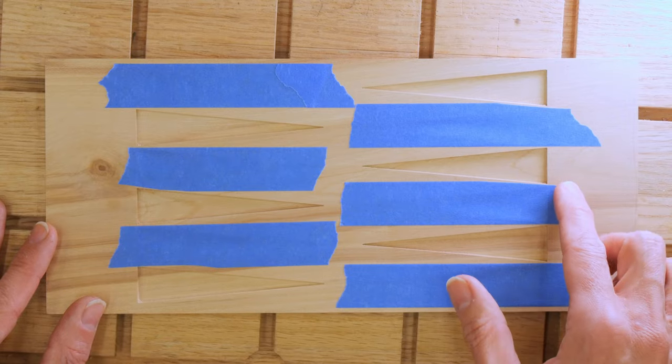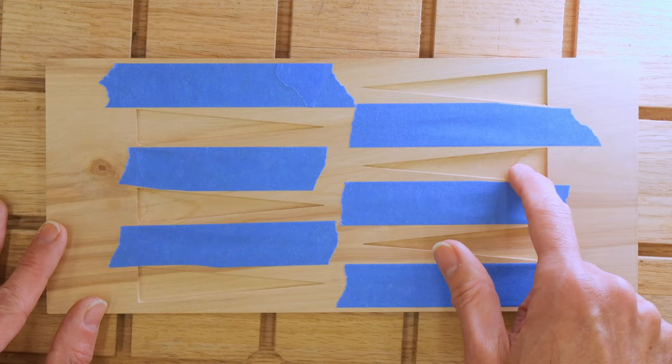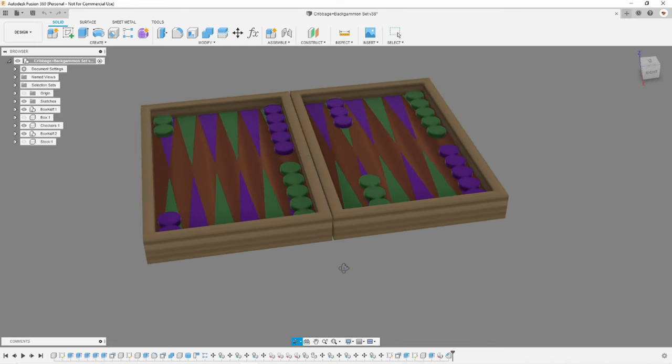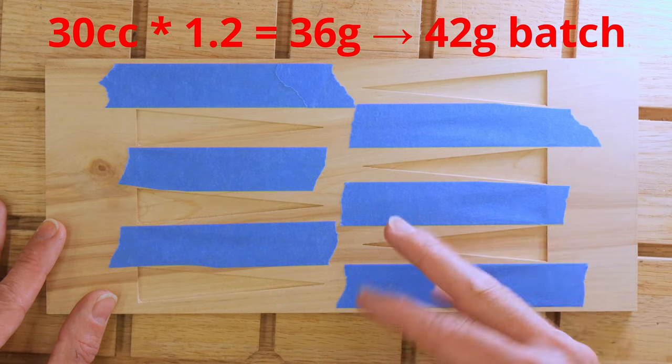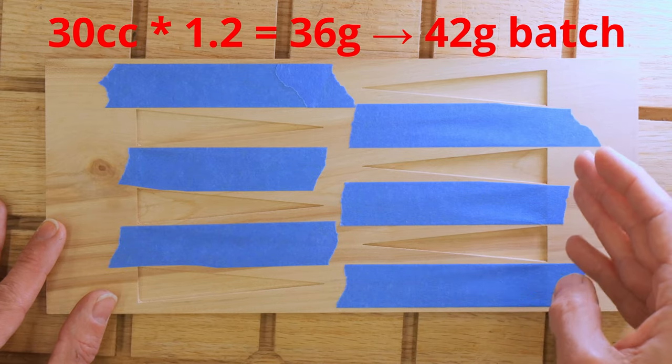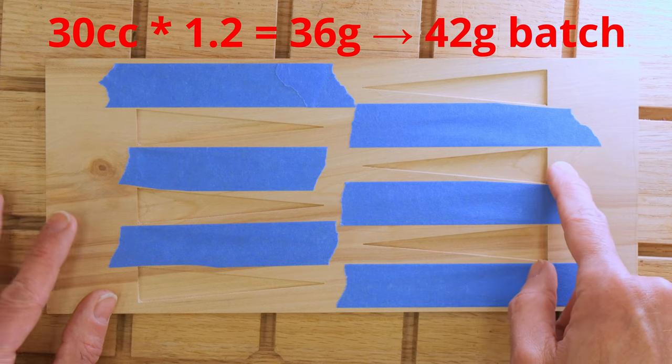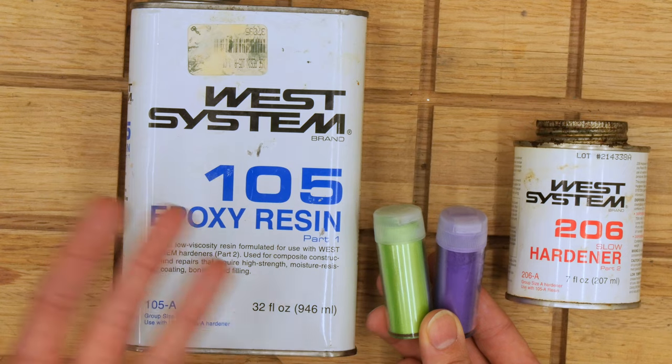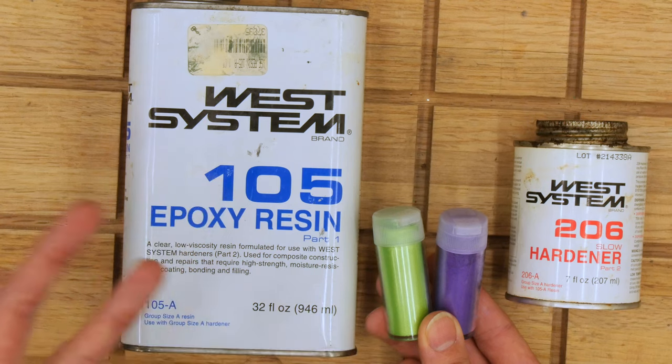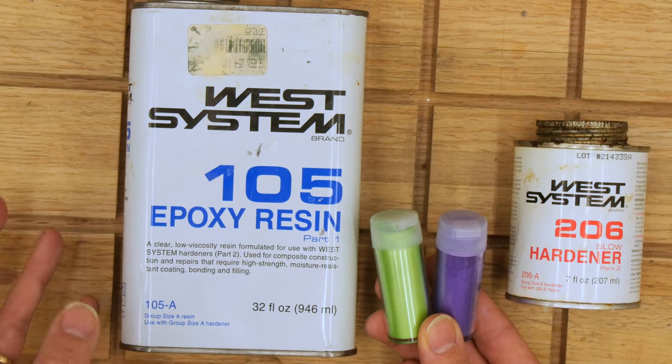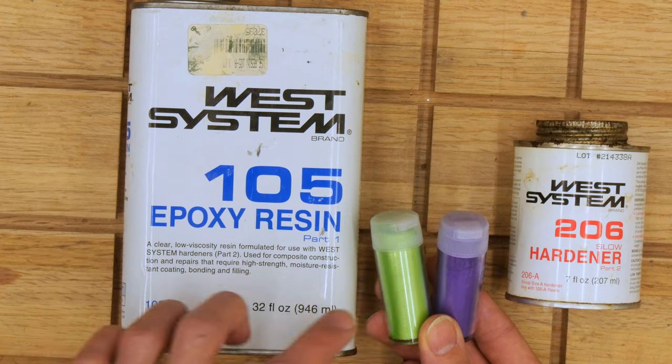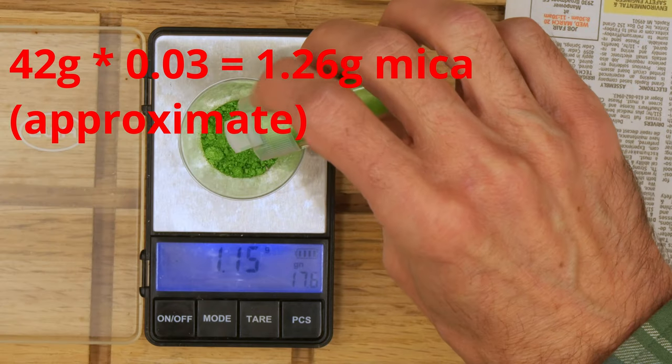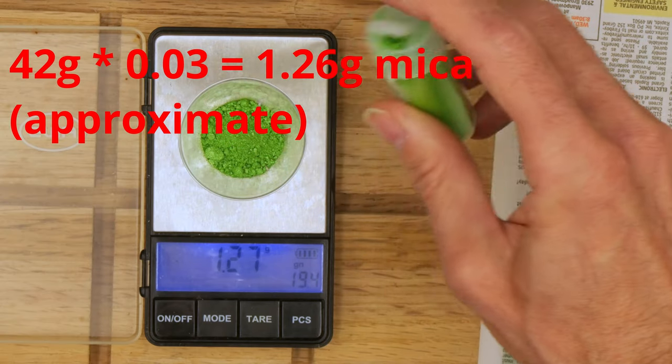I taped off every other pocket and because I have two of these boards I need to fill 12 pockets with the first color. According to Fusion 360, 12 of these pockets have a volume of 30 cubic centimeters and they need to multiply by the specific gravity of the epoxy which is about 1.2 so I would need 36 grams to exactly fill the pockets and I want a little bit extra so I'm going to make a 42 gram batch. I looked up online for some guidelines as far as using mica powder and epoxy and I found suggestions anywhere from about 2% to 5% by weight and I'm going to start with 3% and with a 42 gram batch of epoxy at 3% that means I need 1.26 grams of mica powder.